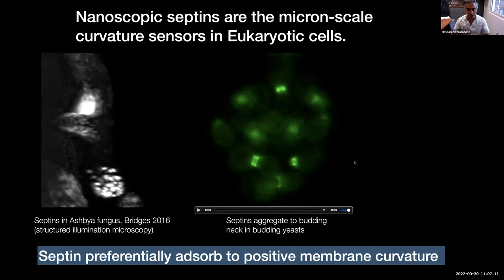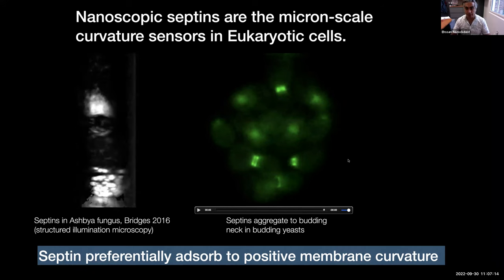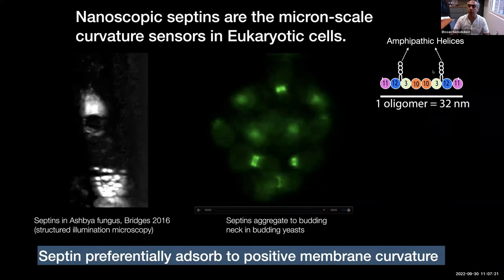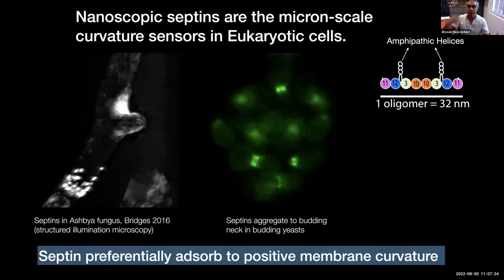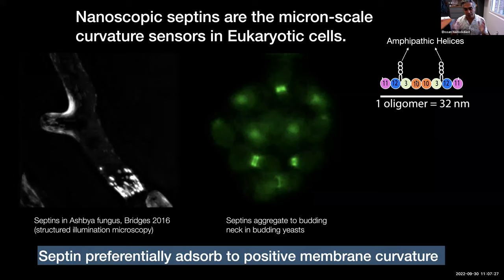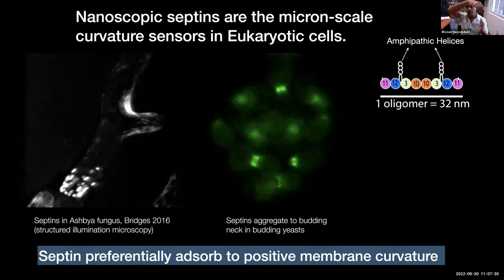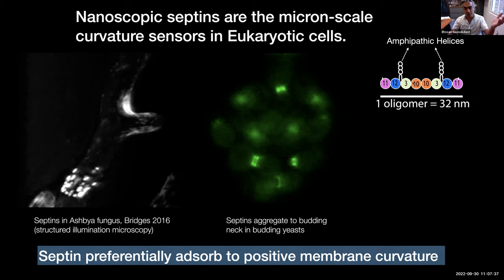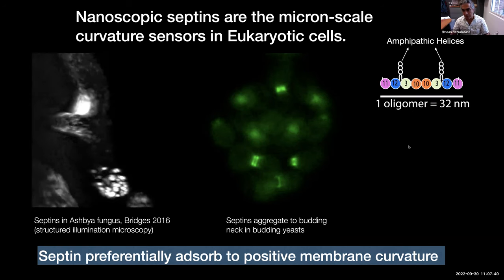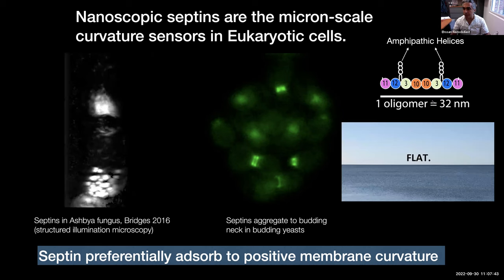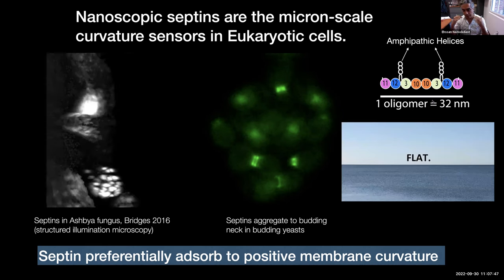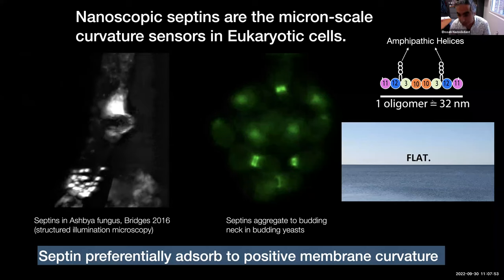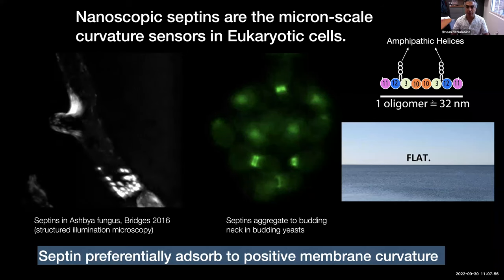As I said, the oligomer itself is 32 nanometers across, and it has two antennas called amphipathic helices — helical structures where the hydrophobic and hydrophilic sides twist with the helical structure. One side is positively charged and hydrophilic, the other is hydrophobic. And this 32 nanometer structure is being asked to sense micron-scale curvature. It's like staring at the ocean and trying to pick out that the earth has curvature. So how do these things do that?